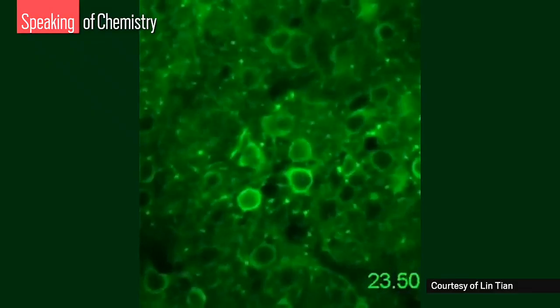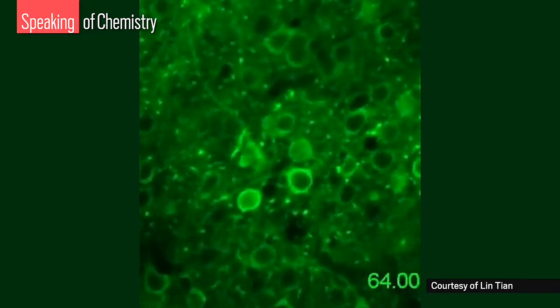Other scientists, such as Lin Tian of UC Davis, are manipulating proteins that already exist in the human brain to build sensors. Using a virus to insert foreign DNA into brain cells, they genetically modified dopamine receptor proteins to glow green when dopamine binds.